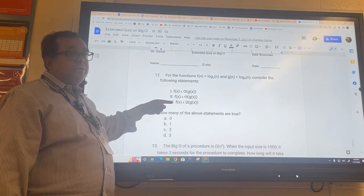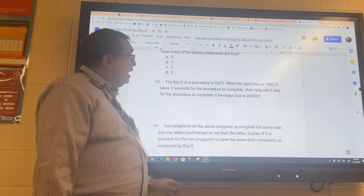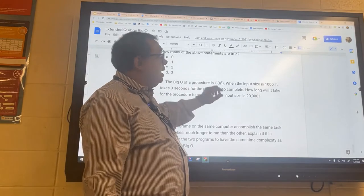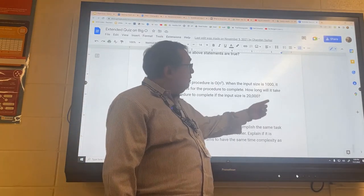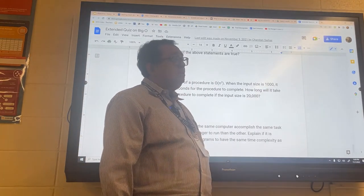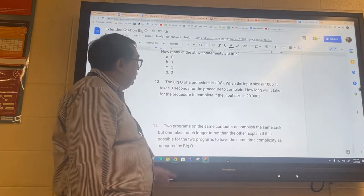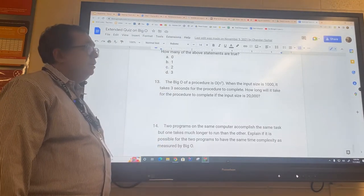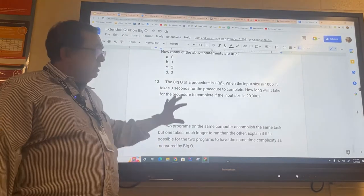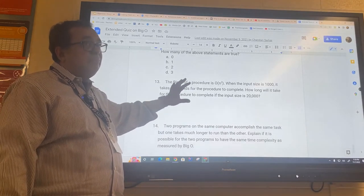If I have a process that is n squared and the input is growing from 1,000 to 20,000, and the output originally was three, what will the new output be? You're having a mental block here. It's a really easy problem, but you're having a mental block.